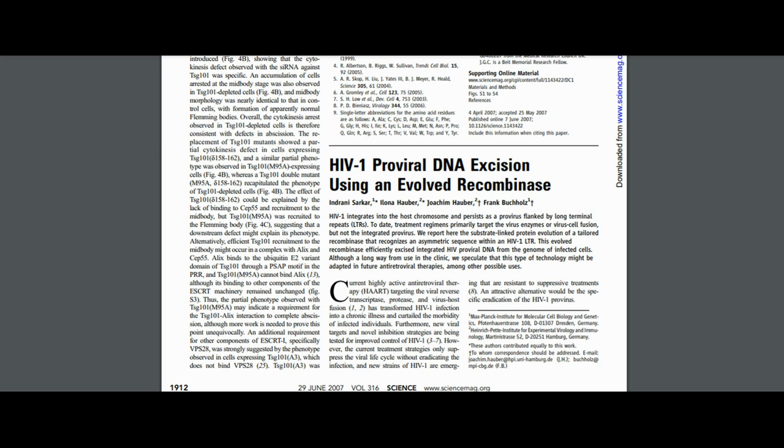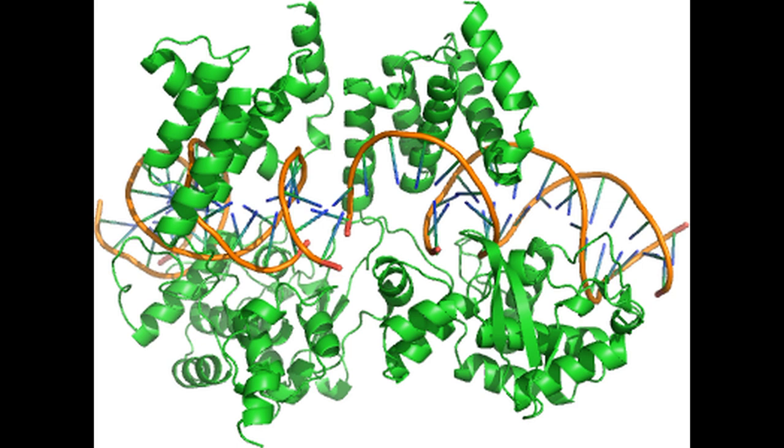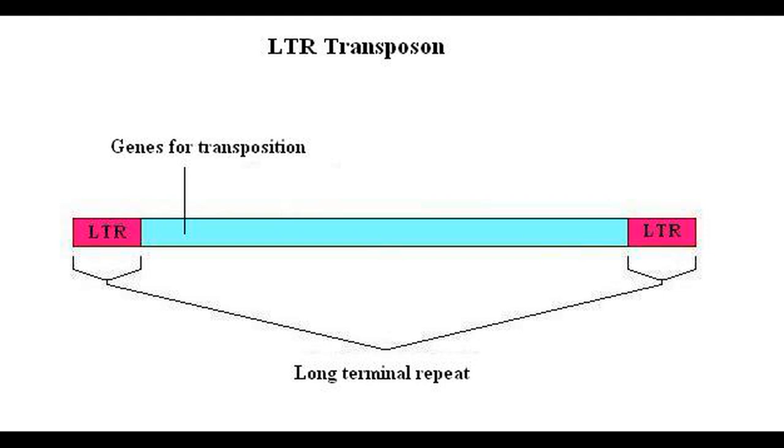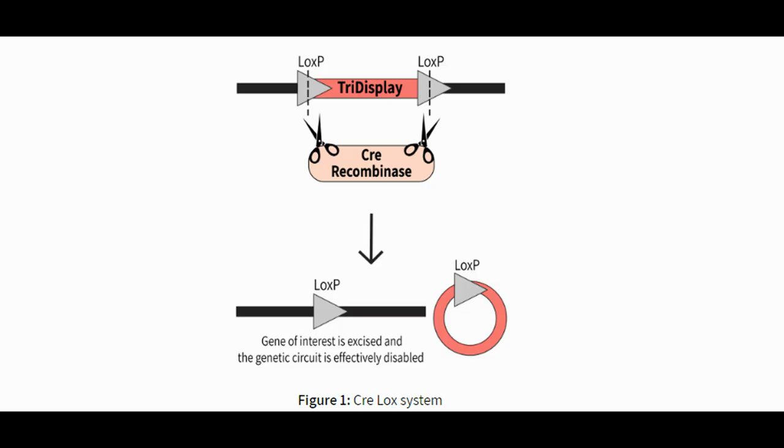My favorite artificial selection experiment is the 2007 HIV-1 proviral DNA excision using an evolved recombinase. Researchers took an enzyme called CRE recombinase, which cuts out DNA between two identical sequences, and evolved it to recognize HIV sequences. The logic behind it is this. When viruses insert themselves into our genome, the DNA they splice in is flanked by sequences called long-terminal repeats.